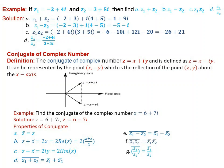Example: If z1 equals minus 2 plus 4i and z2 equals 3 plus 5i, find z1 plus z2, z1 minus z2, z1 times z2, and z1 over z2. For z1 plus z2: minus 2 plus 3 plus i times 4 plus 5 equals 1 plus 9i. For z1 minus z2: minus 2 minus 3 plus i times 4 minus 5 equals minus 5 minus i.